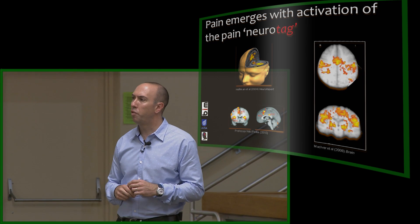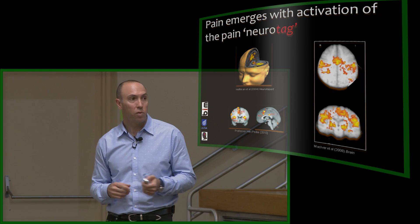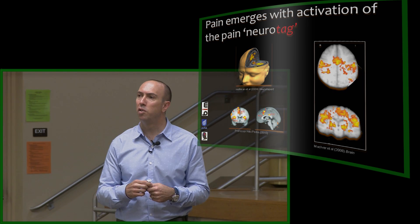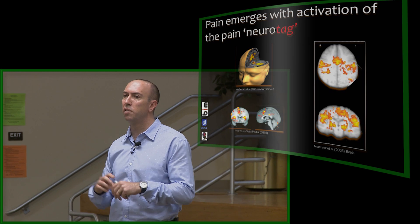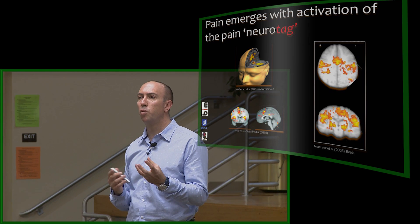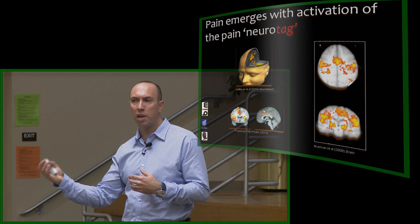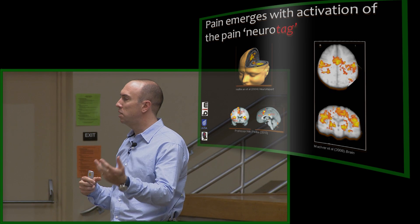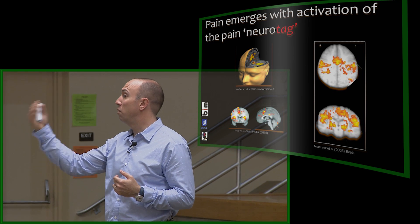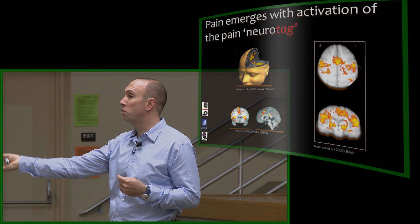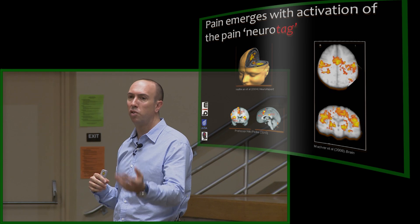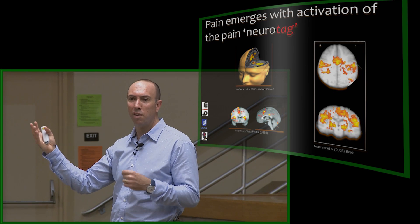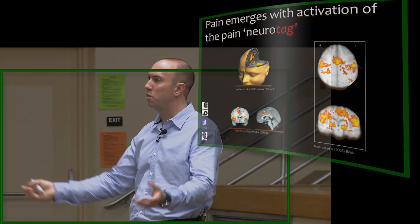It's the idea of representations. Representations refer to networks of neurons — brain cells — activation of which produces a particular output. That output might be pain, or it might be a sneeze, or it might be a visual representation of your car, or the sound of your child, or it might be a word. So it could be any sort of output.